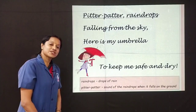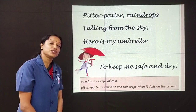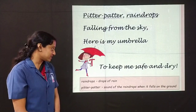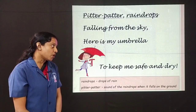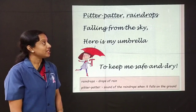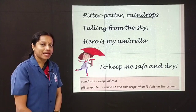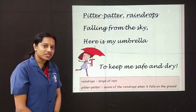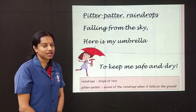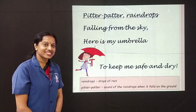Now let us go to the meanings. Raindrops — they are the drops of rain. Pitter patter — that is the sound of the raindrops when it falls on the ground. Now let us repeat this stanza: Pitter patter, raindrops falling from the sky. Here is my umbrella to keep me safe and dry.